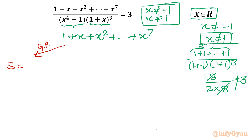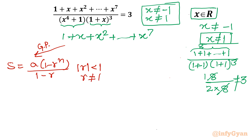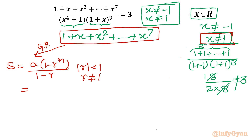We know the sum formula in a geometric progression: S = a(1 − rⁿ)/(1 − r), where a is the first term, r is the common ratio, and n is the total number of terms, with the condition that r ≠ 1. In our expression, the first term a is 1, the common ratio r is x (since each term is x times the previous), and the total number of terms n is 8.